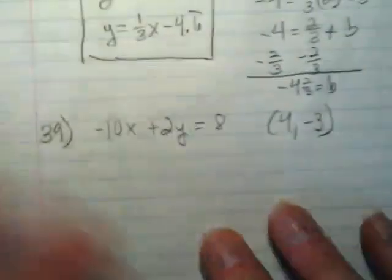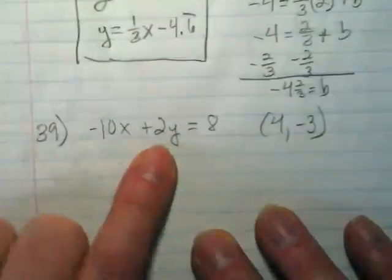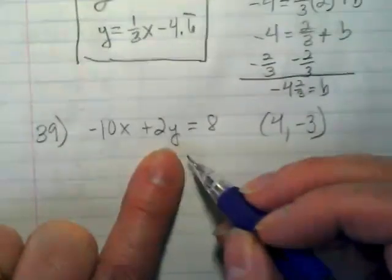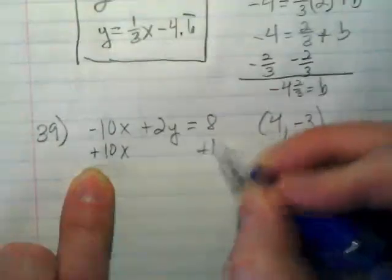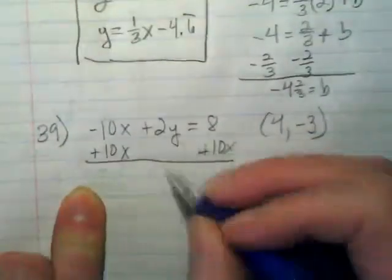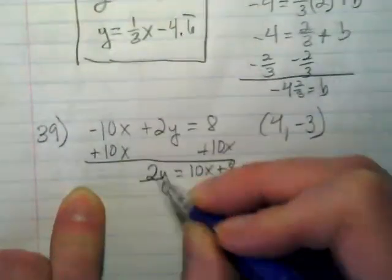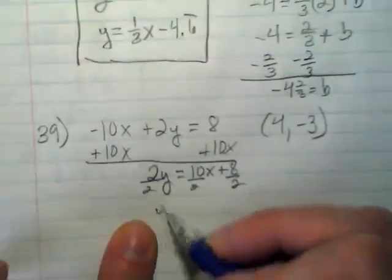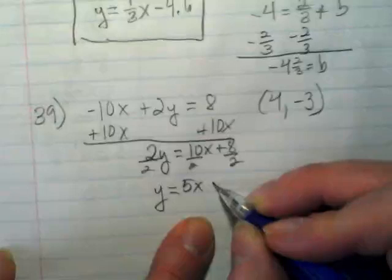And finally, number 39 is in standard form. So, before we can find the slope, I want to get the y isolated and have this in slope intercept form. So, I'm going to add the 10x to both sides because it was a negative. We get 2y is equal to 10x plus 8. Divide by 2. And we get y is equal to 5x plus 4.